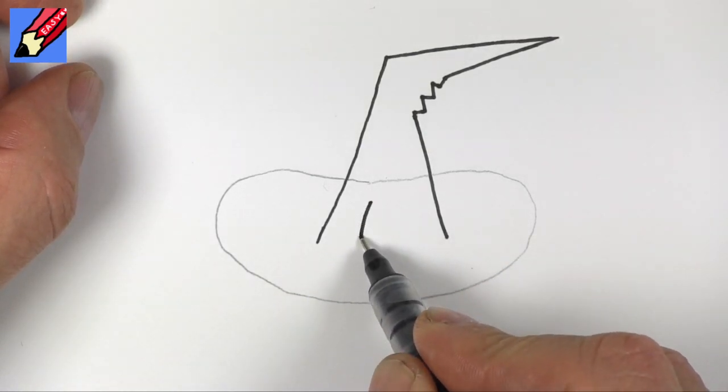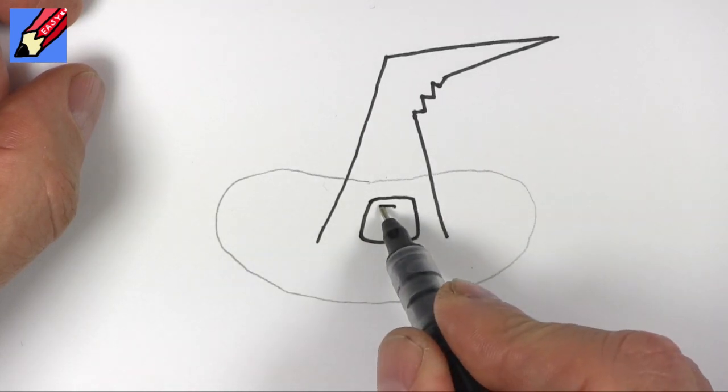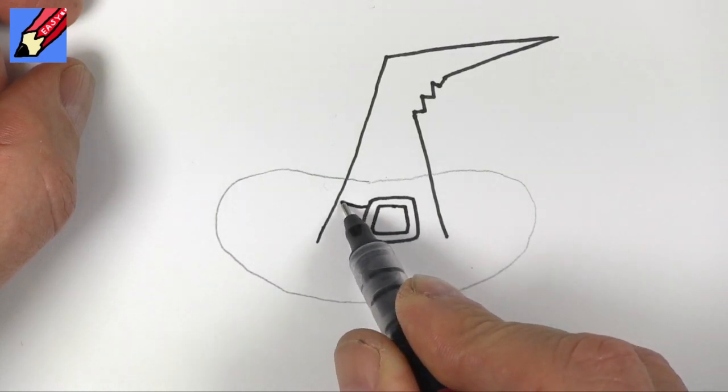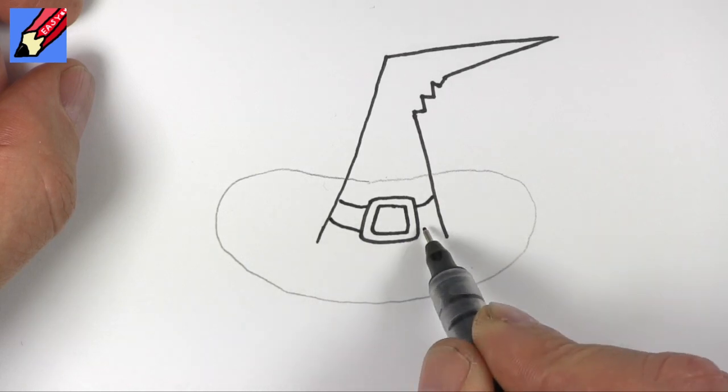Now here you want to draw a buckle on the front of the witch's hat. It's kind of a square with roundy corners. Then this will be the band around the hat and that kind of curves around.